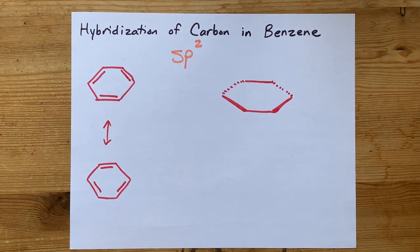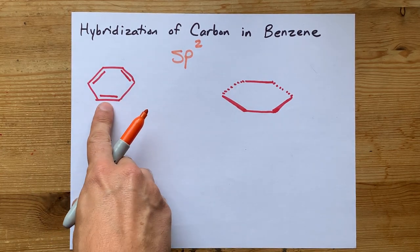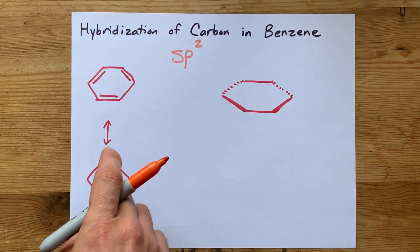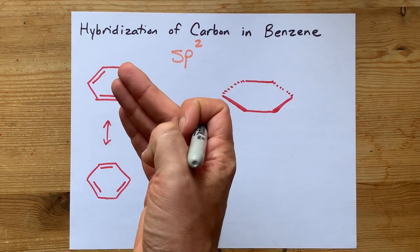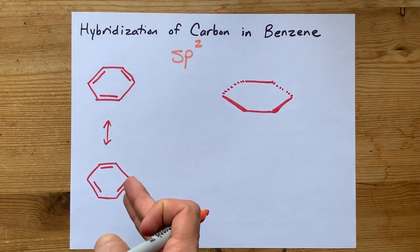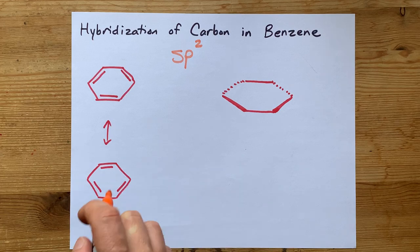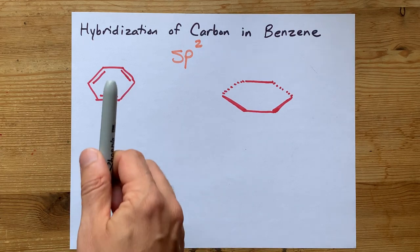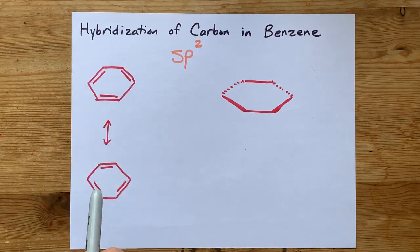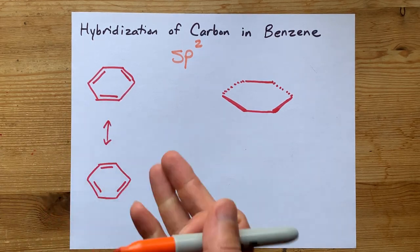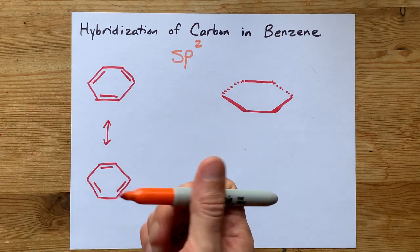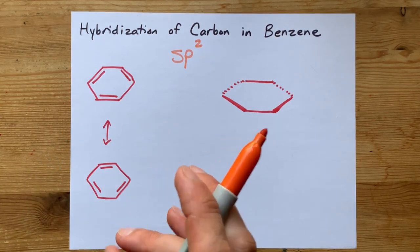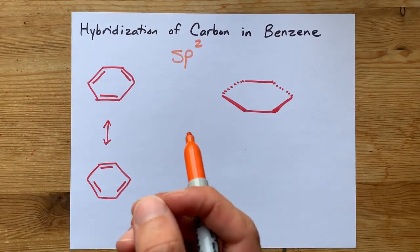One representation of benzene has alternating double bonds around a hexagon. The resonance structure for that, which is equally valid, has the double bonds in opposite places. Each of the bonds in benzene are all the same size — they're a little bit shorter than a single bond, a little bit longer than a double bond.